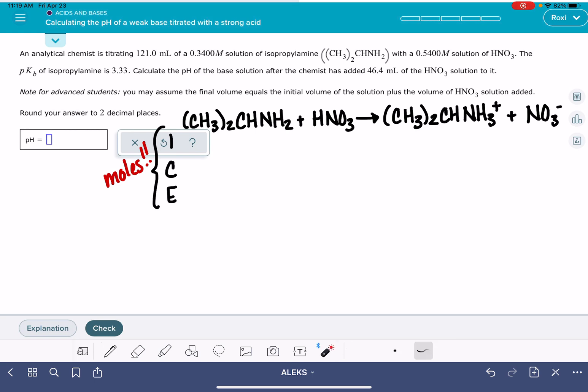So first thing we need to do is calculate how many moles of the base we have. We'll do that using the molarity of the base and the volume of the base. 0.3400 moles per liter of the base, and we just want to multiply that by the volume of the base that we have in units of liters. 121 milliliters, 0.121 liters. This is going to give us the number of moles, 0.04114 moles.